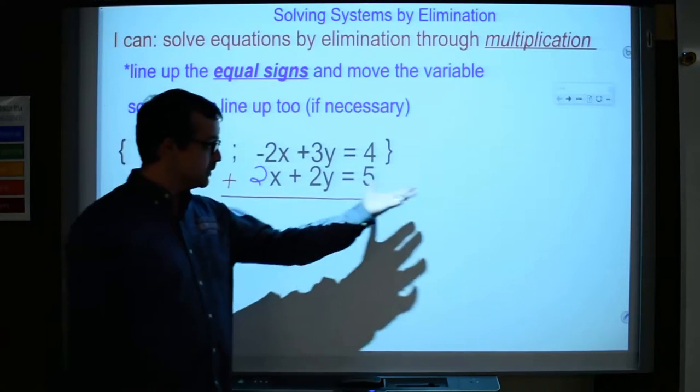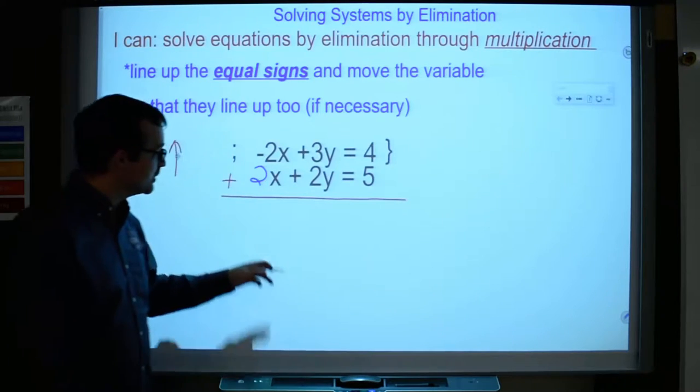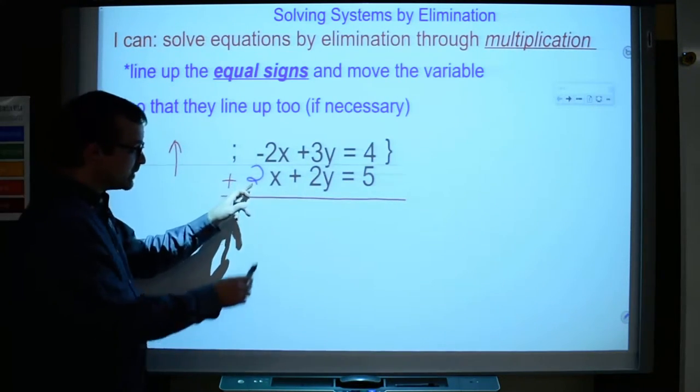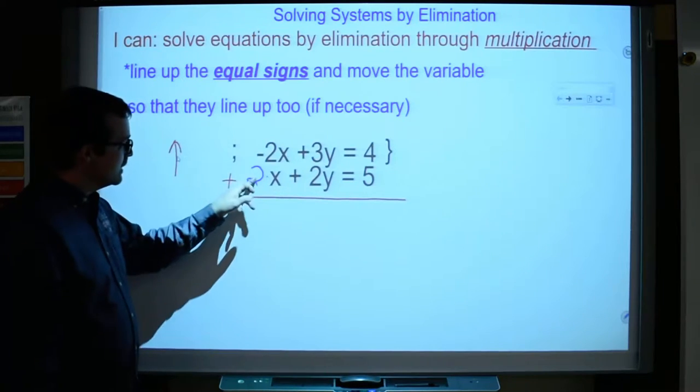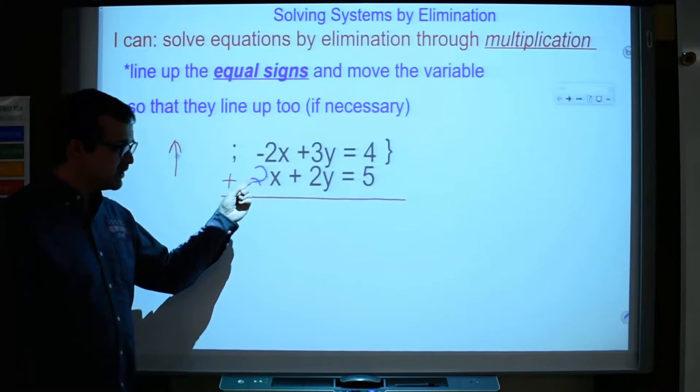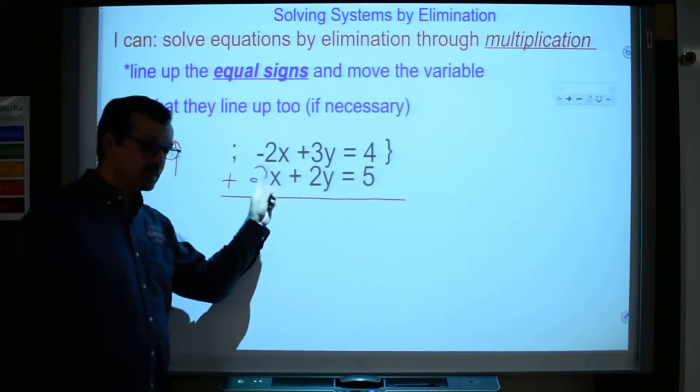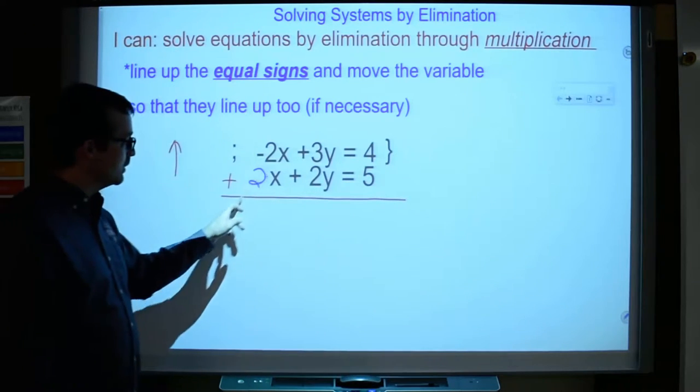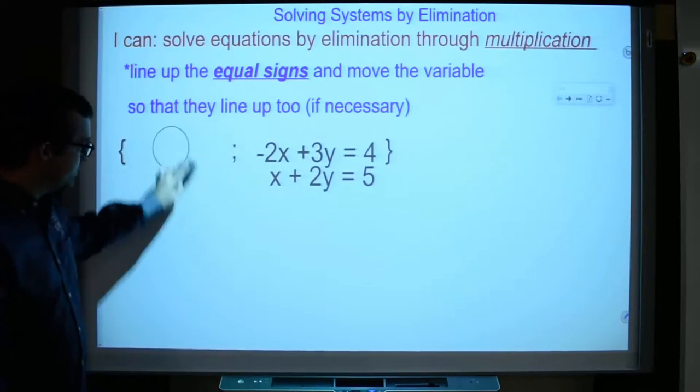So how can I get this to be a 2x? Remember, for this to be 2x, it'd have to be 2 times, right? So how can I get a 2 there? Well, I'd have to multiply the 2, the x by 2. But I can't just multiply the x by 2. I have to multiply everything by 2. So let's see what that looks like here.